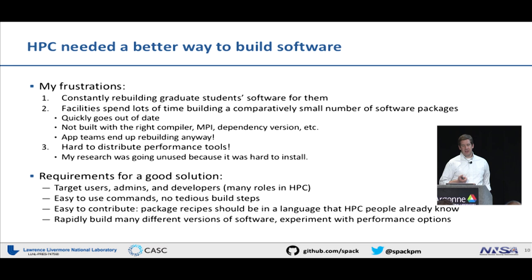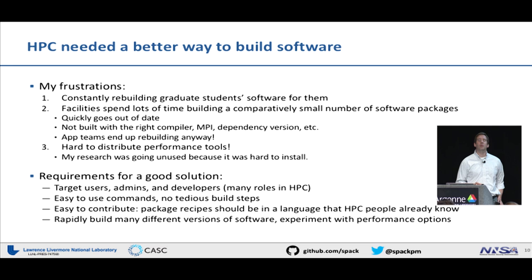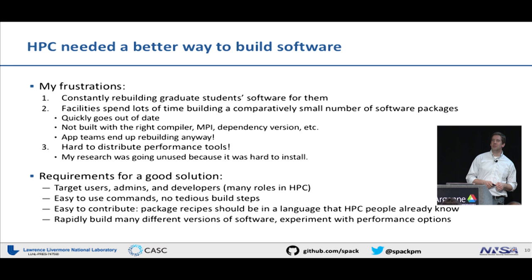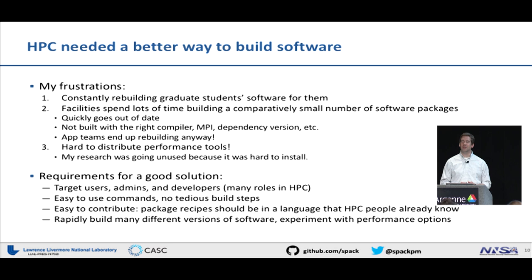The tricky part was satisfying all the requirements HPC people have. HPC people tend to want control over everything because they want performance. There's a broad set of people in HPC — in the cloud you can assume the developer has control of their own node, but in HPC you're sharing a machine. You have to target users who just want to run codes, admins who are deploying software, and developers. It has to be easy to use, easy to contribute, and you need to be able to experiment — building lots of different versions to find the best performance on a system.